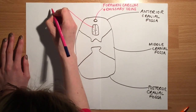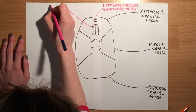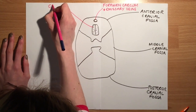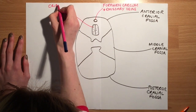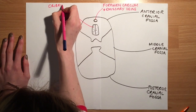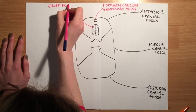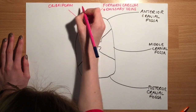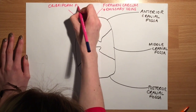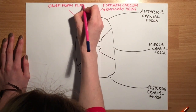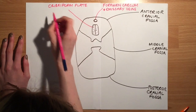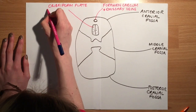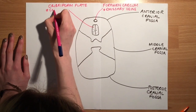Next we are going to focus on the cribriform plate, which contains foramina that transmit the sensory nerve fibres from the nasal mucosa, transmitting smell to the olfactory bulb of cranial nerve one.